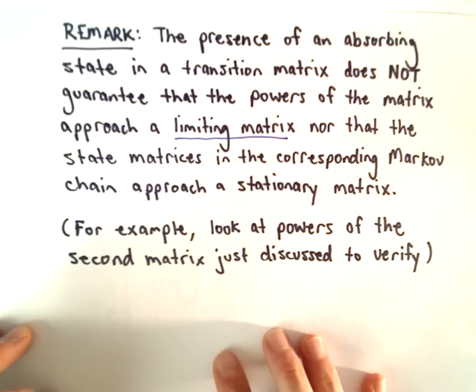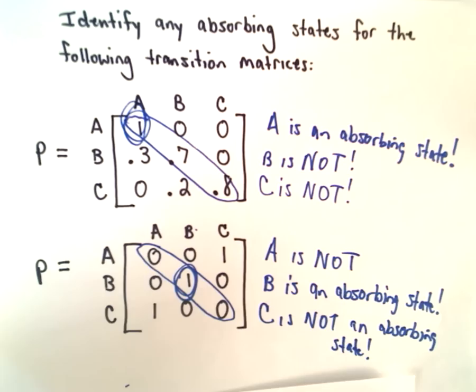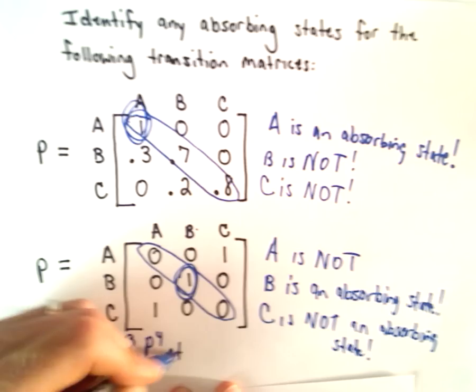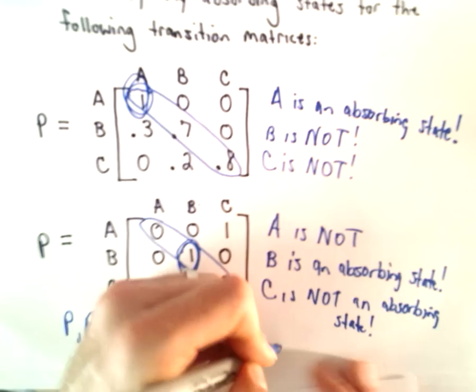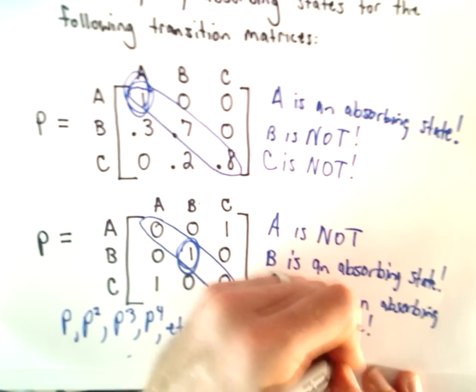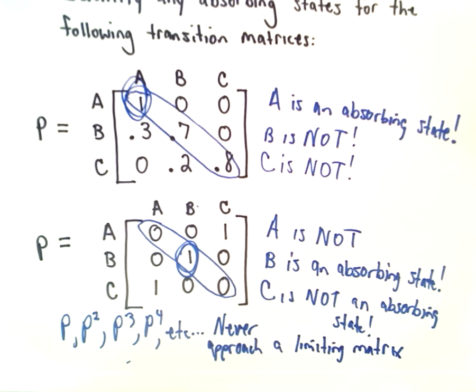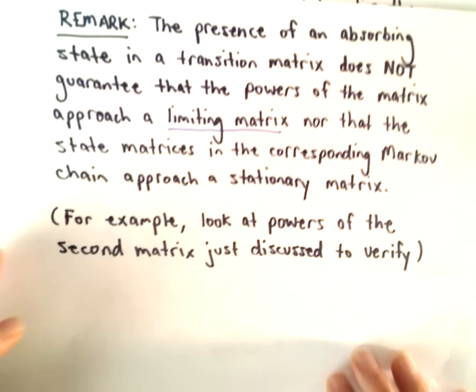To verify this, if you look at the second matrix and start looking at powers — P, P squared, P cubed, P to the fourth, etc. — you'll see that this transition matrix will never approach a limiting matrix. You can see that the powers actually just start oscillating back and forth. It has to approach one specific unique matrix, and it's just not doing that.